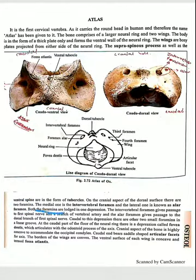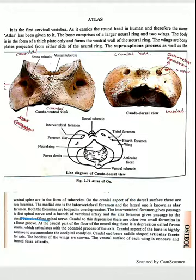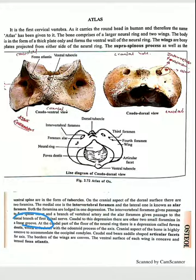There are two foramina on the dorsal surface. The medial one is the intervertebral foramen and the lateral one is the alar foramen. Both foramina are fused in one depression — the dorsal one is known as the alar foramen. The intervertebral foramen gives passage to the first spinal nerve and a branch of the occipital artery, and the alar foramen gives passage to the dorsal branch of the first spinal nerve.